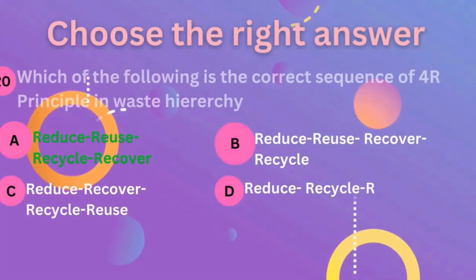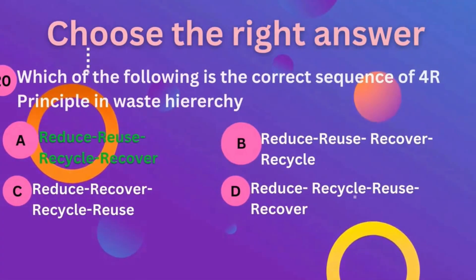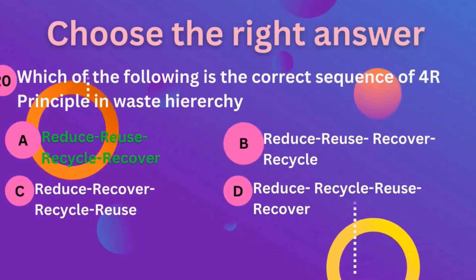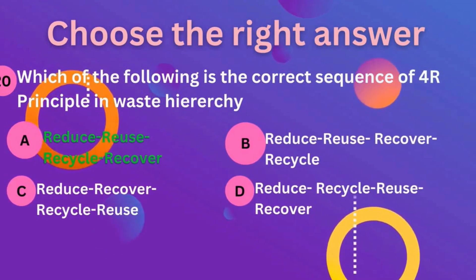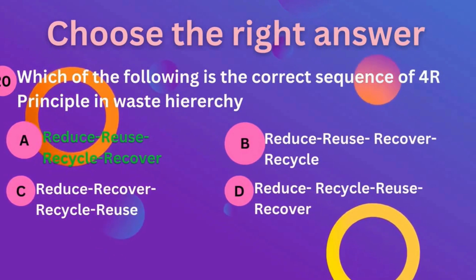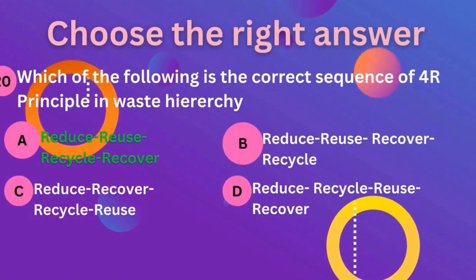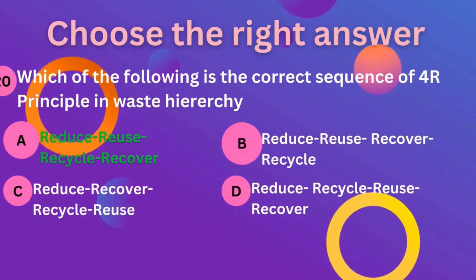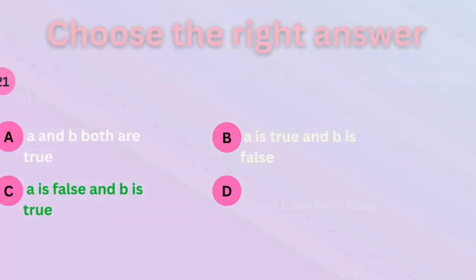Question 20: which of the following is the correct sequence of the 4R principle in waste hierarchy? The correct answer is: Reduce, Reuse, Recycle and Recover.